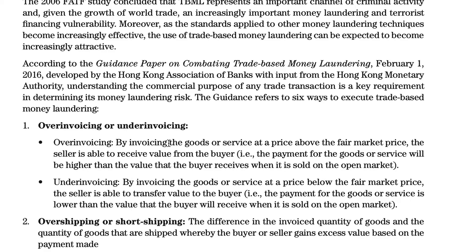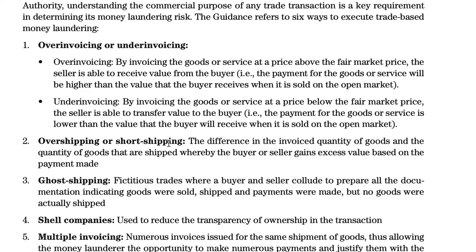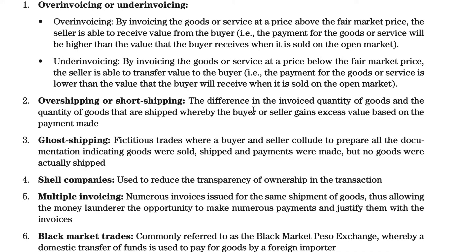Understanding the commercial purpose of any trade transaction is a key requirement in determining money laundering risk. There are six ways to execute trade-based money laundering. Over-invoicing: by invoicing goods or services above fair market value, the seller receives excess value from the buyer. Under-invoicing: by invoicing below fair market price, value is transferred to the buyer, who gains more than they paid when selling on the open market.